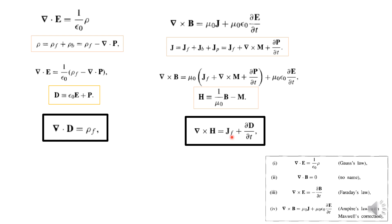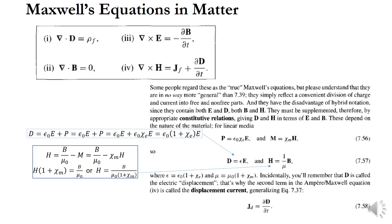So Maxwell's equations inside matter, consolidated, are: del dot D equals rho F; del dot B equals 0; del cross E equals minus dou B by dou T; and del cross H equals J_F plus dou D by dou T.